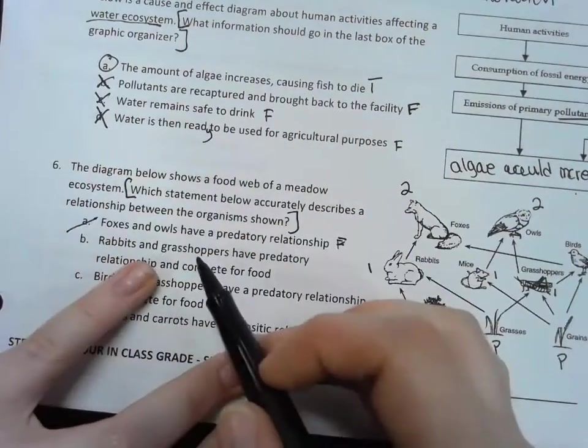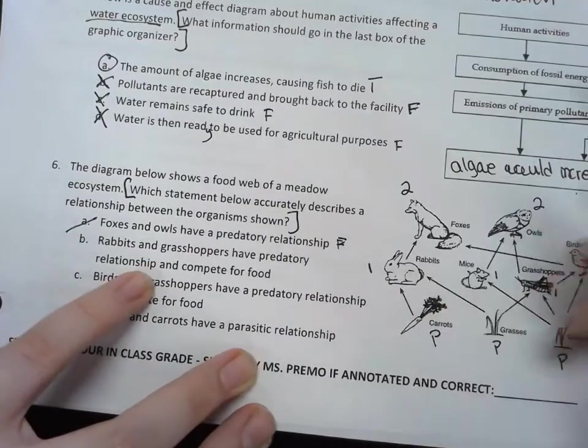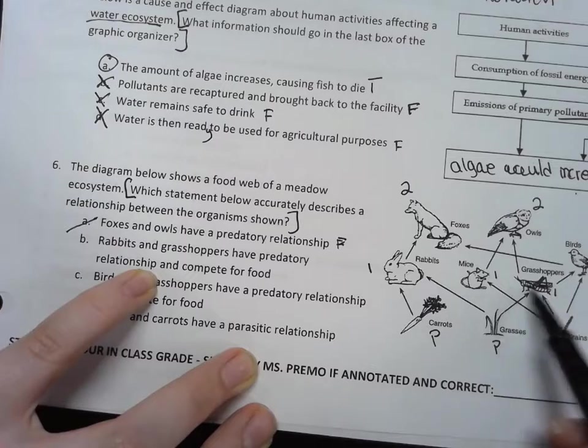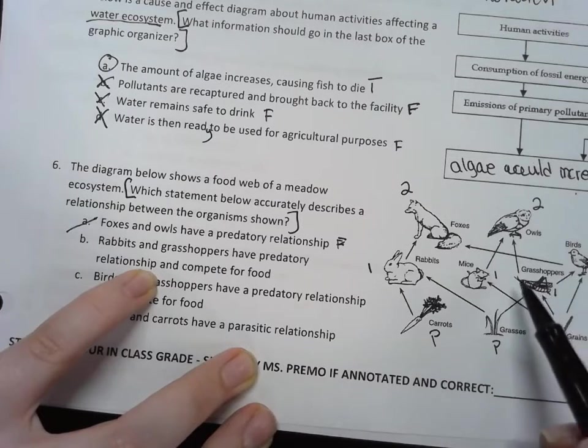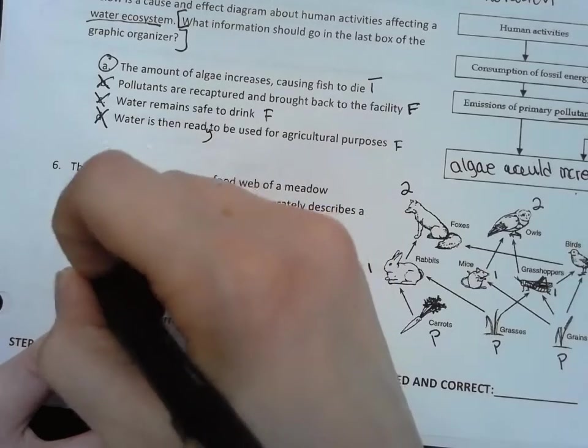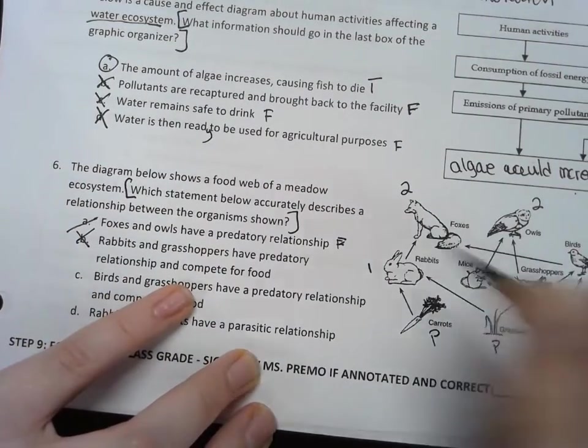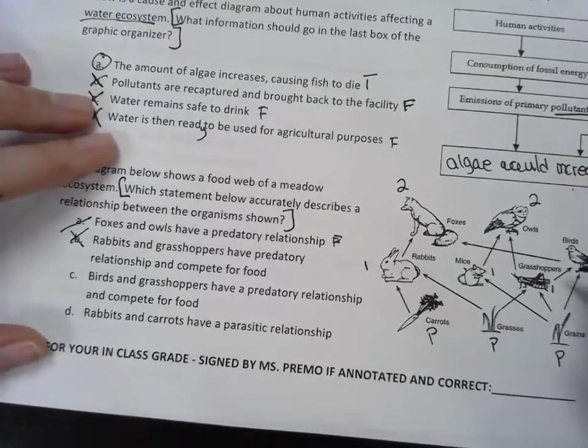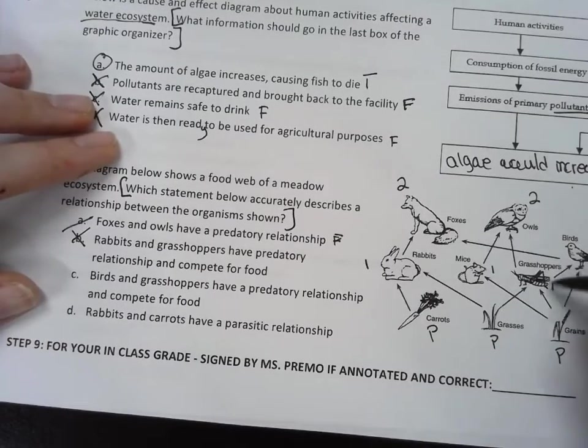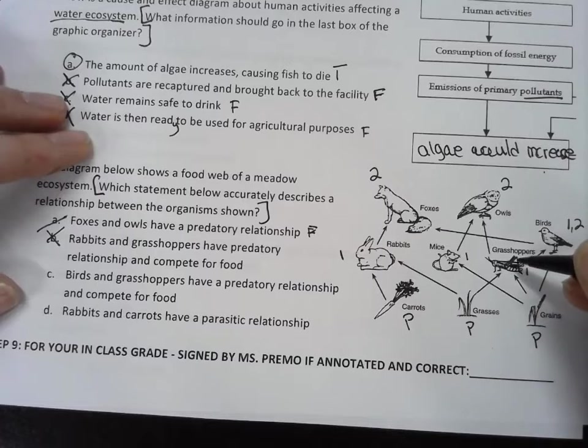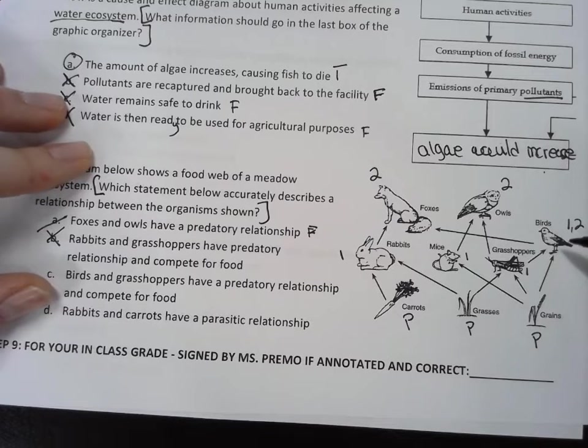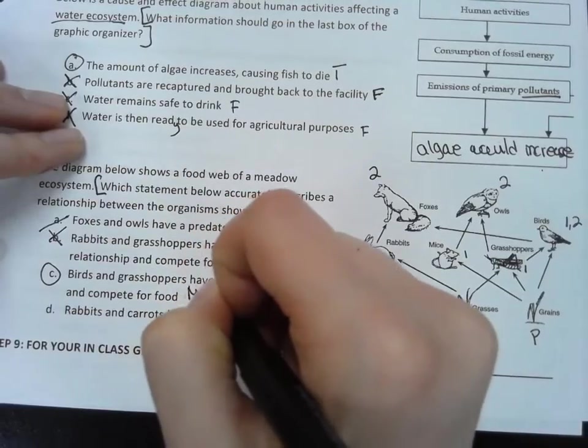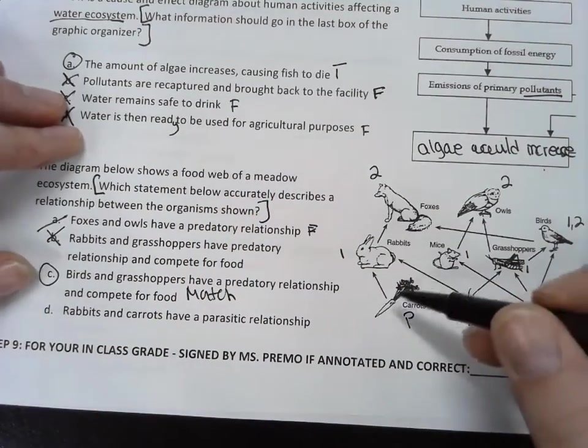That would require that either the fox is eating the owl or the owl is eating the fox - neither is that's happening, so this is not true. Rabbits and grasshoppers have a predatory relationship - so if I find rabbits and grasshoppers, okay, there's no arrow connecting between them, so they can't have a predatory relationship, although they do compete for food. But because of this first part, it's not true. Birds and grasshoppers have a predatory relationship - well yes, there's an arrow connecting them, birds are eating grasshoppers, and they compete for food. So this looks like a match.